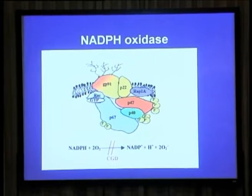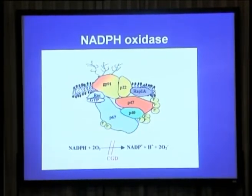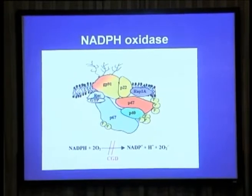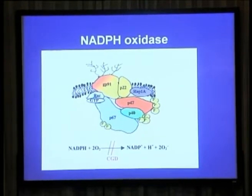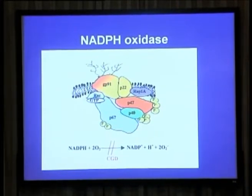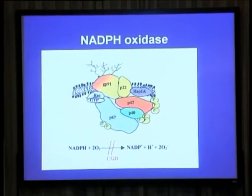We had mentioned the NADPH oxidase. CGD, or chronic granulomatous disease, results from genetic mutations in components of the NADPH oxidase. What does NADPH oxidase do? It takes oxygen and converts it into reactive oxidants — unstable molecules that have antimicrobial activity, able to destroy bacteria and fungi. In addition, the NADPH oxidase also activates proteases, which are enzymes that degrade proteins, and some of these proteases also have antimicrobial activity.